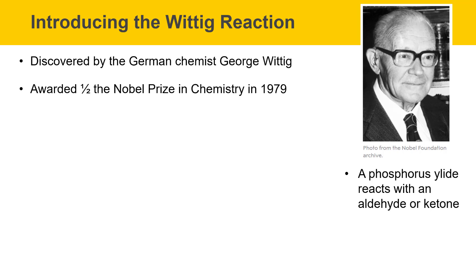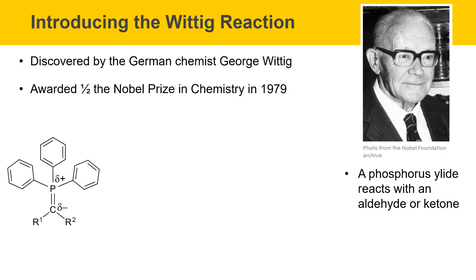In this reaction, a species called a phosphorus ylid reacts with an aldehyde or ketone. Here's a picture of a generic phosphorus ylid. The features of this molecule include a phosphorus-carbon double bond, and this bond is polarized such that the phosphorus has a partial positive charge and the carbon has a partial negative charge. This molecule reacts with an aldehyde or ketone, where the oxygen has a partial minus and the carbon has a partial positive. They line up because their partial positives and partial negatives complement each other.